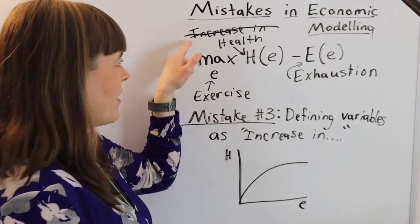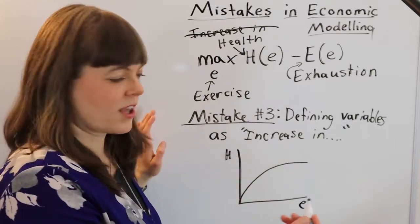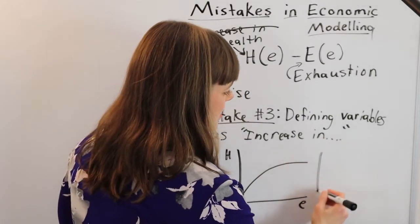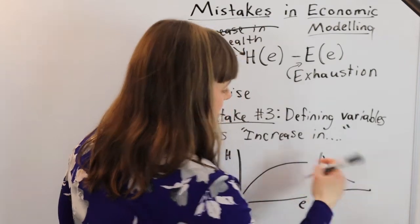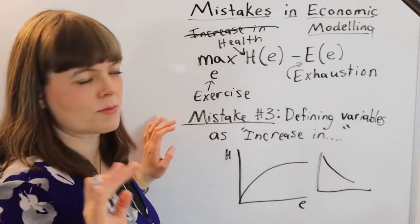So if you were to define this as increase in health, then the graph you're working with is actually going to look like this. It's the derivative of this, and that's just going to be weird.